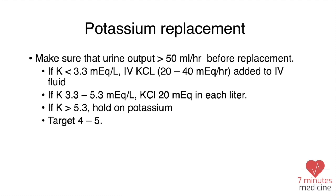For potassium replacement, we want to make sure the patient has good urine output — more than 50 ml per hour — before starting replacement. If potassium is less than 3.3, give 20 to 40 mEq per hour IV. If potassium is 3.3 to 5.3, give 20 mEq of potassium per liter of IV fluid. If potassium is above 5.3, hold potassium and keep checking. Our target is 4 to 5.